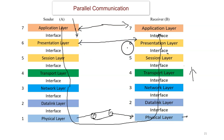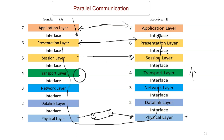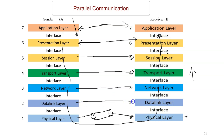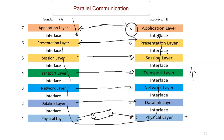The presentation layer communicates with the presentation layer on the receiver end. The session layer on the sender communicates with the session layer on the receiver. The transport layer on the sender side communicates with the transport layer on the receiver side. The network layer on the sender communicates with the network layer on the receiver. The data link layer on the sender side communicates with the data link layer on the receiver. The physical layer on the sender communicates with the physical layer on the receiver. When there is involvement of more than one layer in a parallel pattern, that is known as parallel communication.